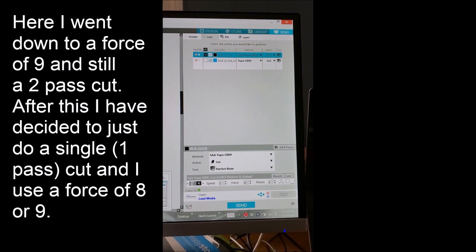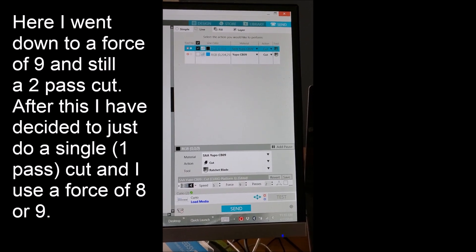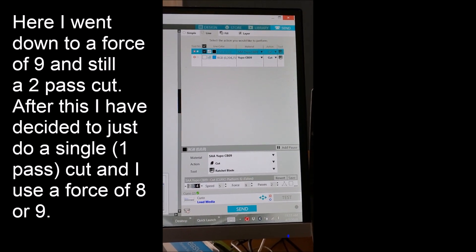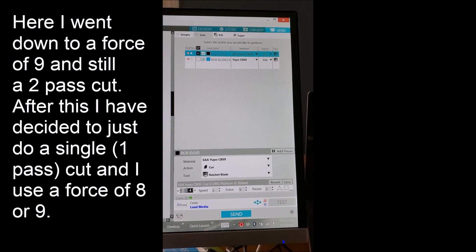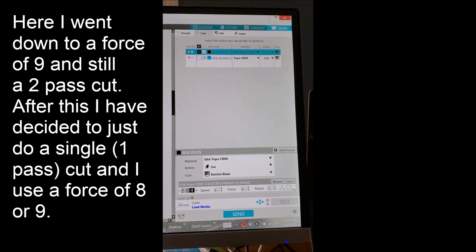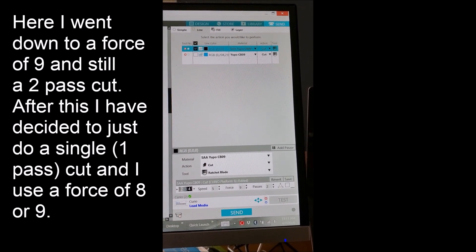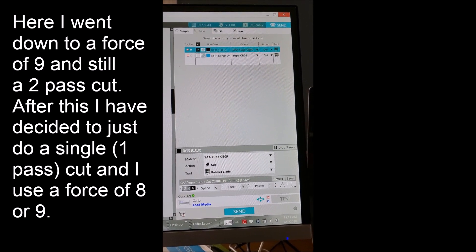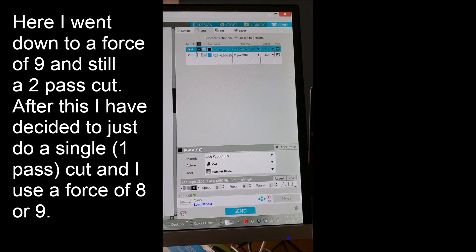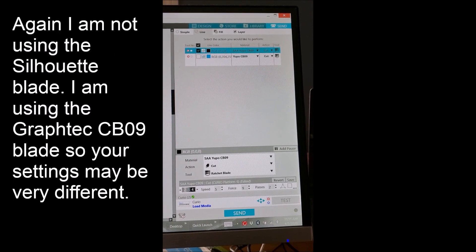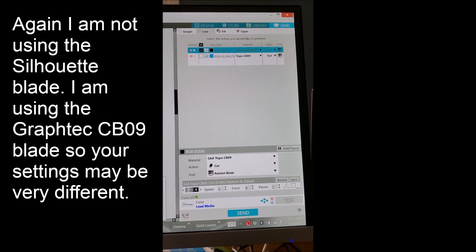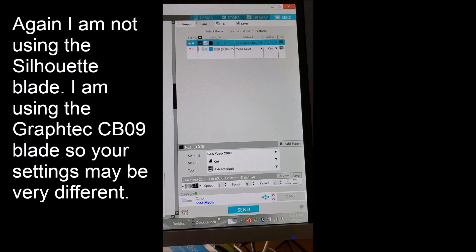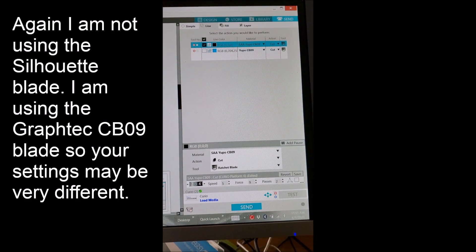Hi, I'm back. And I just wanted to let you know where I ended up with the settings. And this paper is much thinner than the regular Yupo paper. And so I ended up lowering the force to nine. I still did a double cut, but I'm thinking you probably don't even need to do that. So I would start on a test piece of paper, if you're going to use this, I'd start with the setting of nine for force and just do a single pass and see how that works for you.